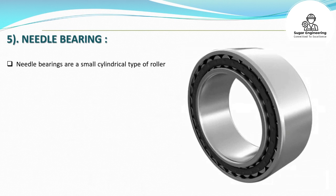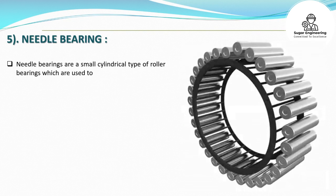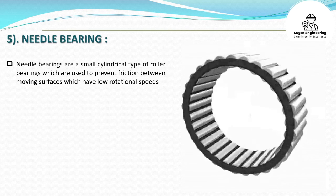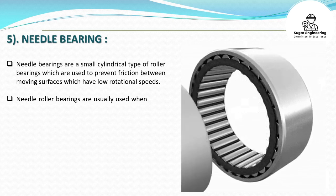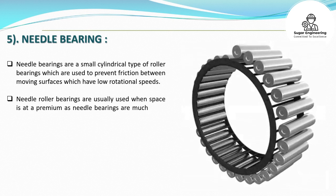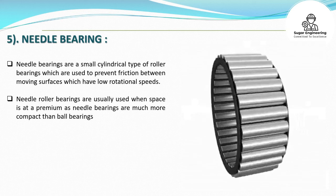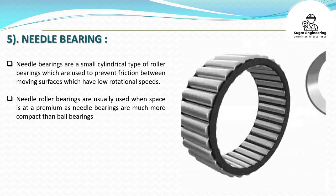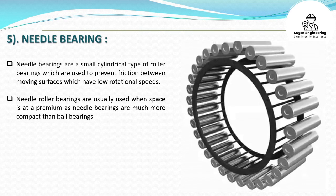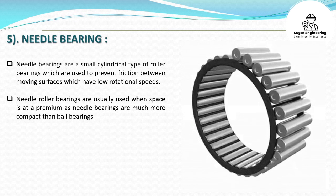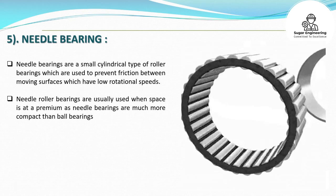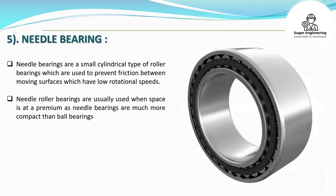Needle bearings are a small cylindrical type of roller bearing used to prevent friction between moving surfaces which have low rotational speeds. They are usually used when space is at a premium, as needle bearings are much more compact than ball bearings.